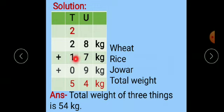Now 0 plus 1 is 1. 1 plus 2 is 3. And 3 plus 2 is 5. So here answer is 54, 54 kg is the total weight. So final answer: Total weight of 3 things is 54 kg.